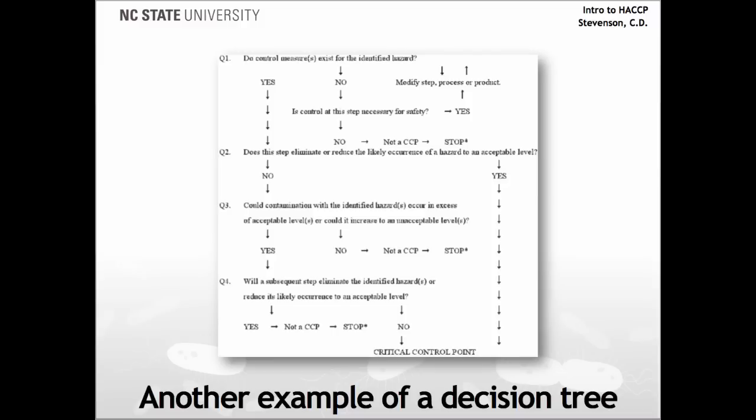Here is another example of a decision tree. You'll notice this decision tree has four questions, whereas the last decision tree only had three. Different scenarios will call for different decision trees. Some decision trees are better for some processes than others. As you go about developing your HACCP plan, you'll find the one that works for you.